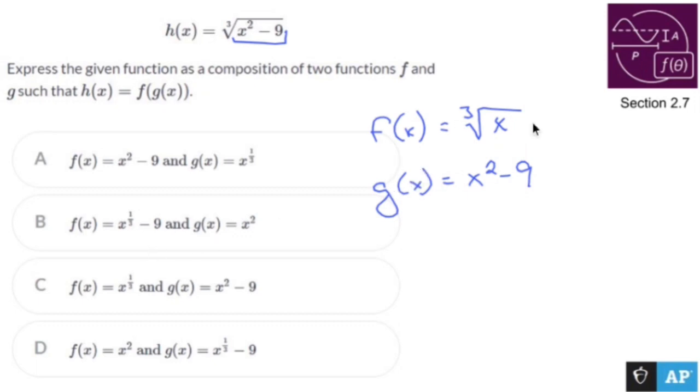So they don't want me to write it out as the cube root. They want me to write it out with a one-third as an exponent. So c seems to be the guy that I have.